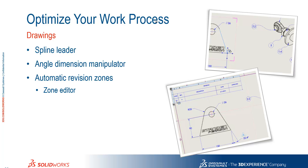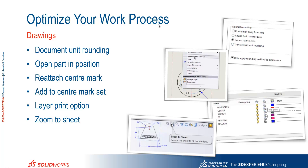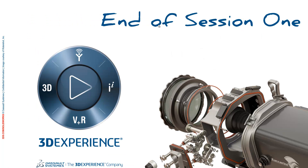So we've seen the introduction of the spline leader style, the angular dimension manipulator, automatic revision zones and the zone editor, new document rounding options, the ability to open a part in its position from the drawing view, some improvements to the centre mark system, the new layer print option, and finally Zoom to Sheet within drawings. That brings us to the end of session one — we'll see you in another video for session two.